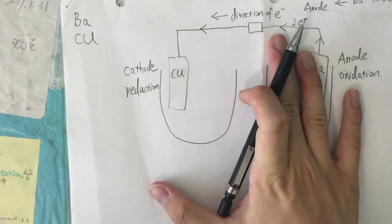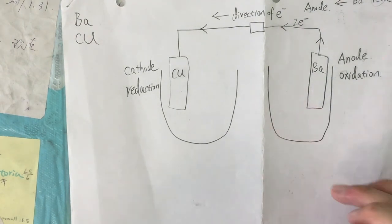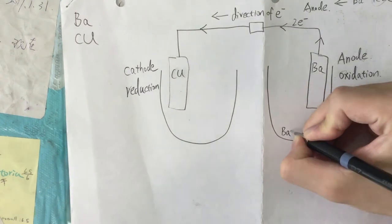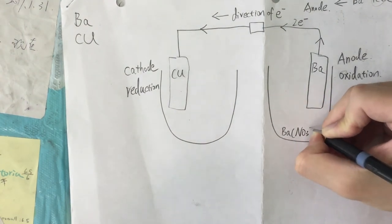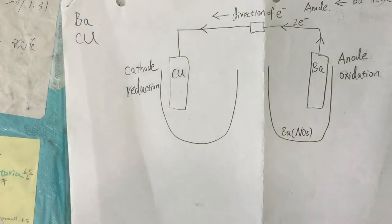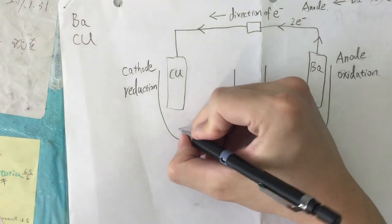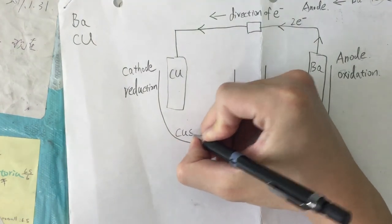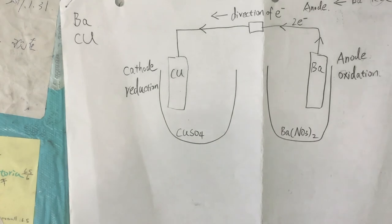Today the solution we're using is Ba(NO₃)₂ — because Ba is 2+ and NO₃ is minus, we put a 2 — and the other is CuSO₄ — copper is 2+ and SO₄ is 2−, so they balance out fine.